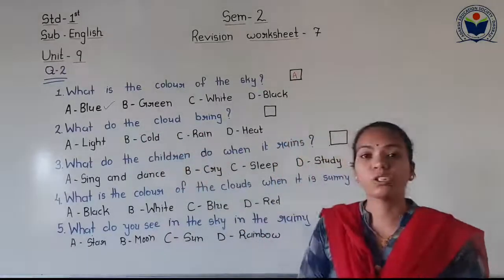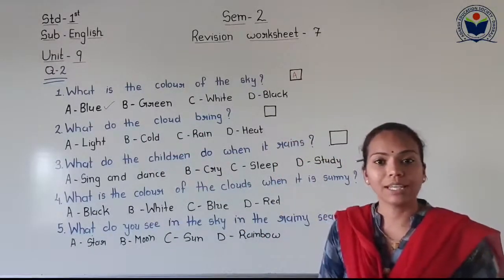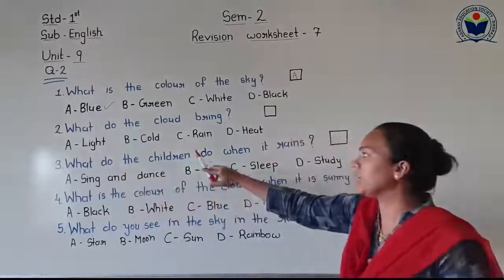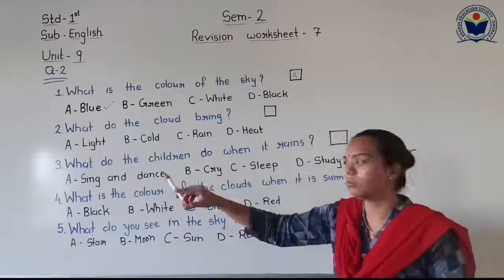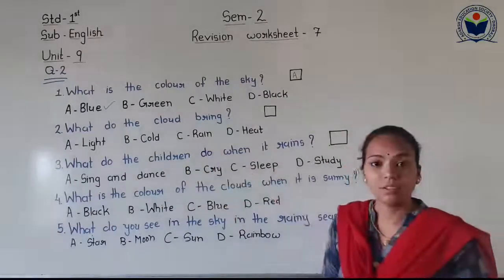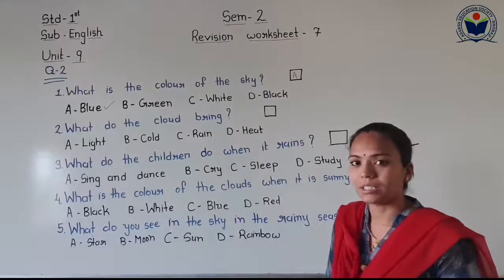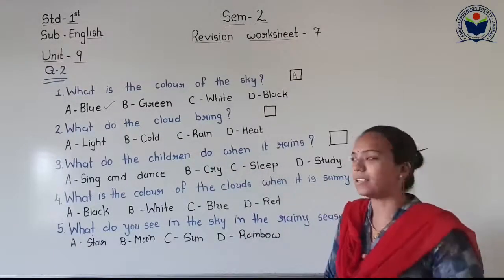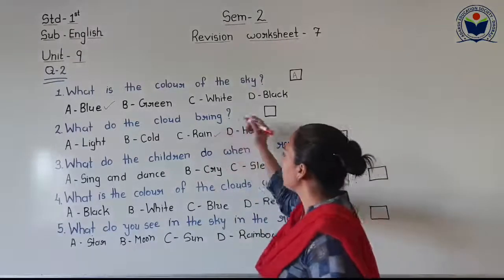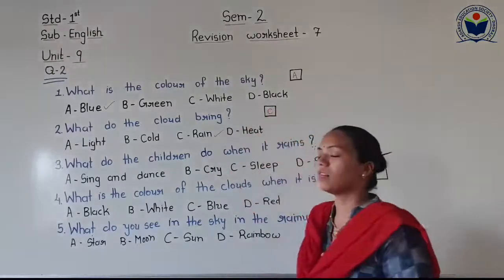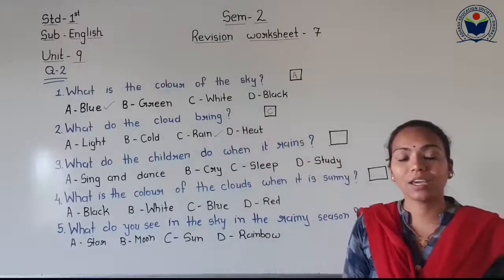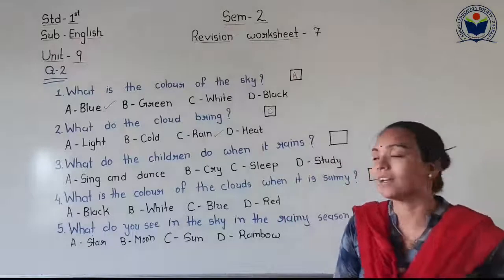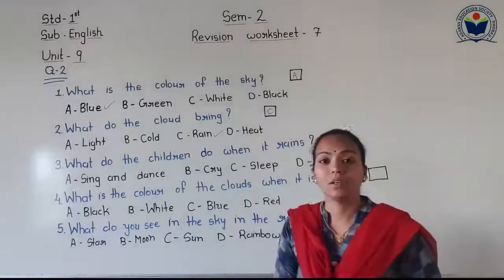Now number 2: What do the clouds bring? Option A is light, option B is cold, option C is rain, option D is heat. The answer is rain — option C. Because the clouds that are heavy bring rain.